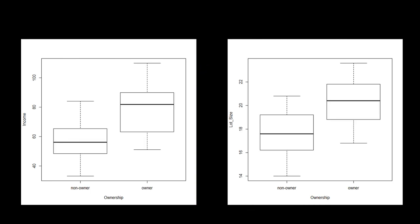For preliminary analysis, we draw box plots of non-owners and owners for both income and lot size. As we expect, we find that people with higher incomes are more likely to own a riding mower, and people with yards that have a higher lot size are also more likely to own a riding mower. So we understand that, and we'll jump into the technique now.